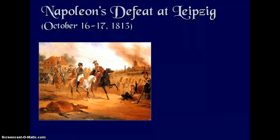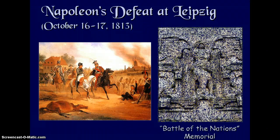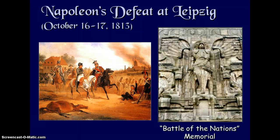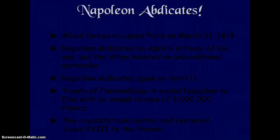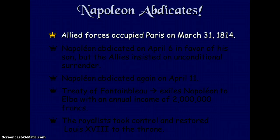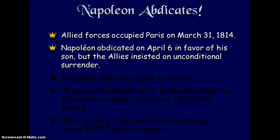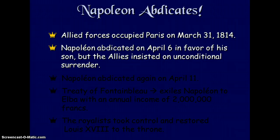Napoleon's defeat at Leipzig in 1813, the Battle of Nations, ended in his defeat. Allied forces occupied Paris on March 31st, 1814. Napoleon abdicated on April 6th in favor of his son, but the allies insisted on unconditional surrender, and Napoleon abdicated again on April 11th.